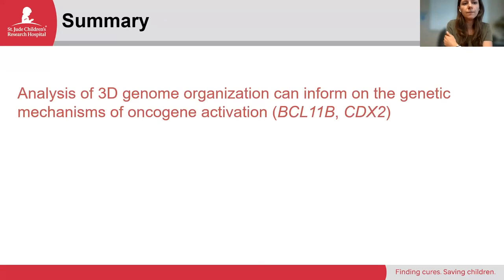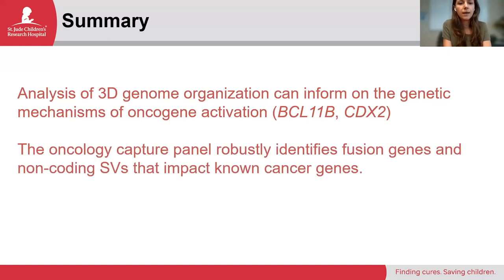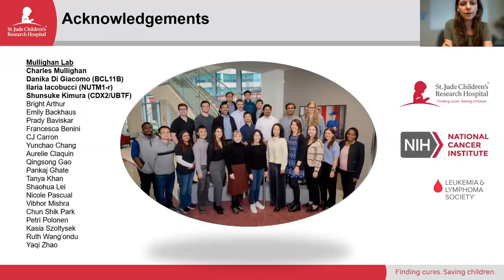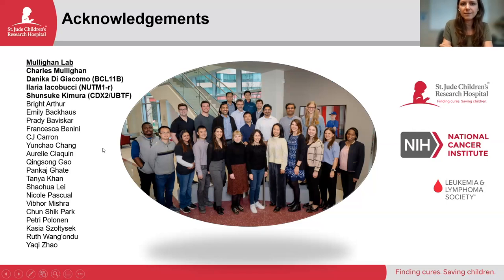To summarize: analysis of 3D genome organization can inform on the genetic mechanisms of oncogene activation. I showed two examples—BCL11B in lineage ambiguous leukemia and CDX2 in B-ALL. The oncology capture panel does robustly identify fusion genes as well as non-coding structural variants that impact cancer genes, and I think that's very important given the wealth of new non-coding alterations being discovered. I'd like to quickly thank the Mulligan Lab and everyone involved, and just point out that Danica in our lab is also working on the BCL11B work. The NUTM1 rearranged samples were from Alari Yakubuchi, and the CDX2 work was led by Shinsuke Kimura. And thank you again to ARIMA for the invitation.